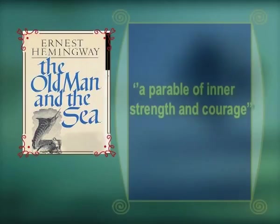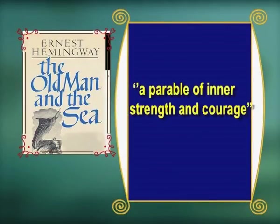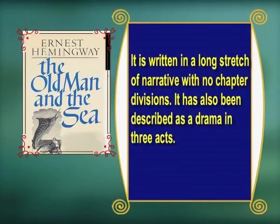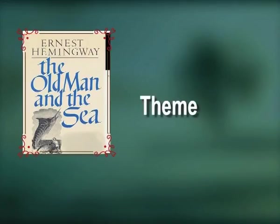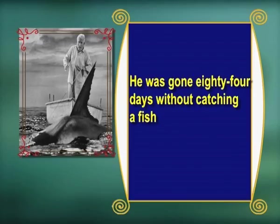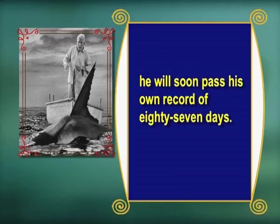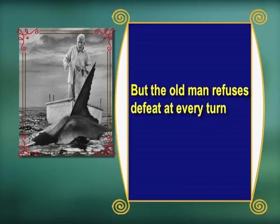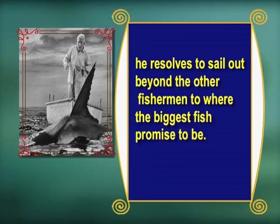'The Old Man and the Sea' has been described as a parable of inner strength and courage. It is written in a long stretch of narrative with no chapter divisions and has also been described as a drama in three acts. The ordering theme of struggle, defeat, and death runs from the very first beginning — Santiago is characterized as someone struggling against defeat. He has gone 84 days without catching a fish and will soon pass his own record of 87 days, but the old man refuses defeat at every turn, resolving to sail out beyond the other fishermen to where the biggest fish promised to be.